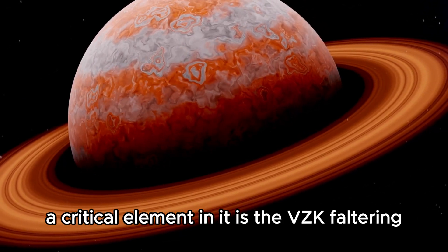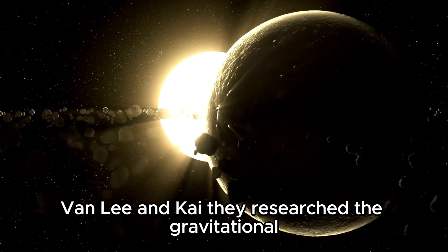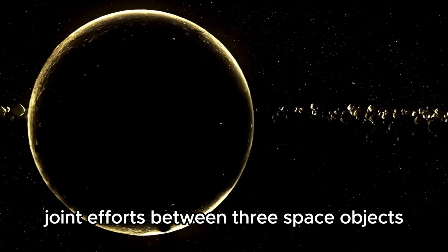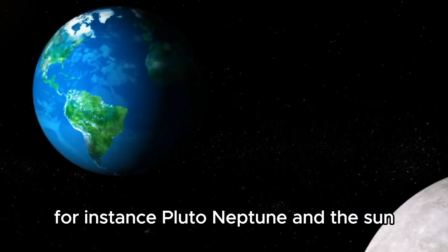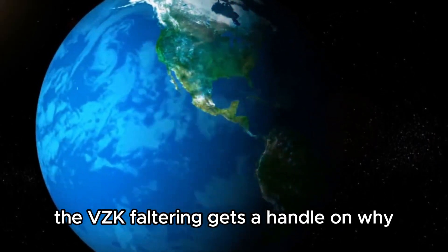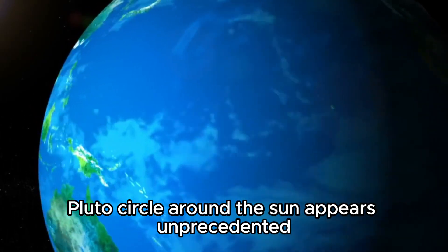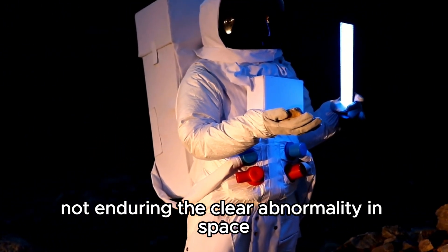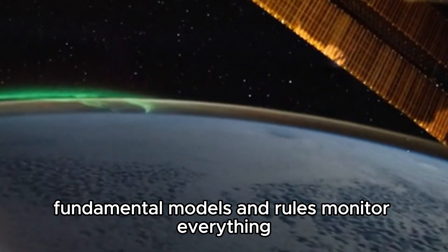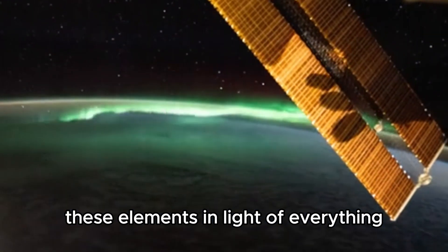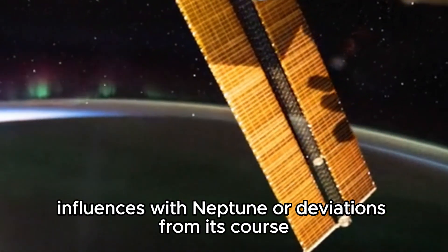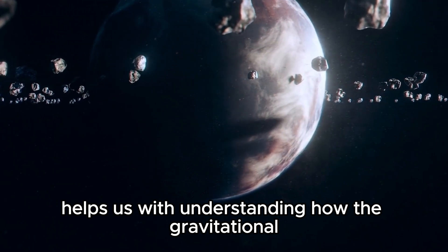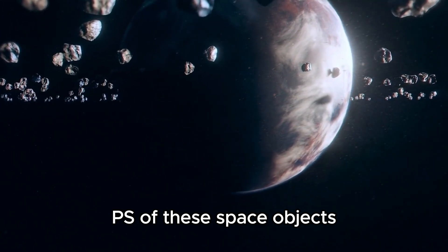A critical element in it is the VZK faltering, named after three researchers, Van, Lee, and Kai. They researched the gravitational joint efforts between three space objects, for instance, Pluto, Neptune, and the Sun. The VZK faltering gets a handle on why Pluto's circle around the Sun appears unprecedented yet remains smooth over the long run. Not enduring the clear abnormality in space. Fundamental models and rules monitor everything. These elements, in light of everything, settle Pluto's circle for slowing down influences with Neptune or deviations from its course. The three-body issue helps us with understanding how the gravitational PS of these space objects influence their way.